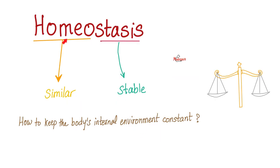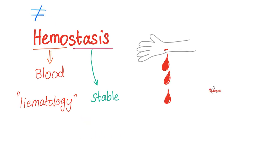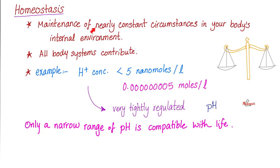What is homeostasis? Homeo means similar and stasis means stable. Basically, this is how your body keeps your internal environment constant. Please don't be fooled — homeostasis is not the same as hemostasis. Homeostasis is the stabilization of your body environment. Hemostasis, on the other hand, is to keep the blood stable — to cause a blood clot and prevent blood loss when you cut yourself.